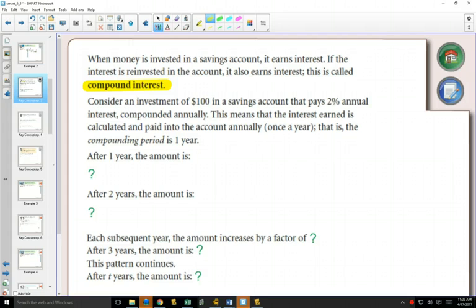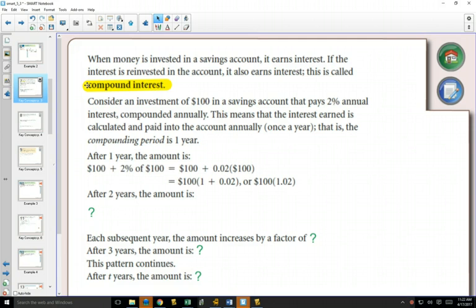So how does compound interest work? We talked a little bit about this the other day. If you had a hundred dollars and you had a savings account that paid 2% per year compounded annually, that means they're only going to pay you interest once a year, whereas compounded monthly they would pay you interest 12 times a year. We would say that the compounding period is one year.